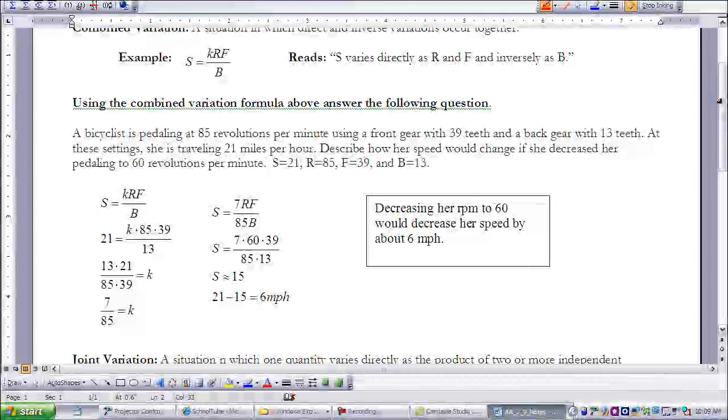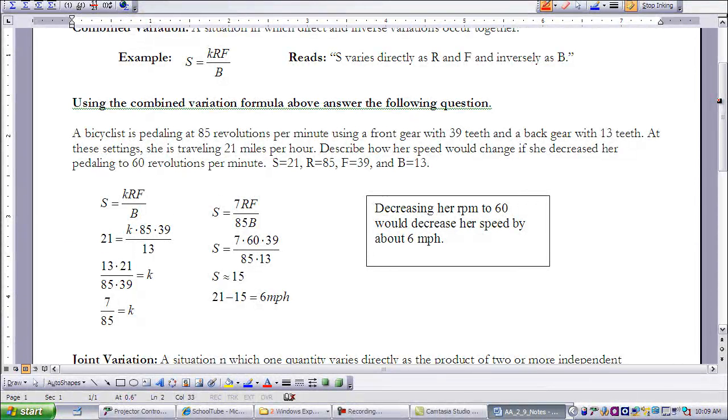So we're going to use our value given, so 39 teeth here's going in place of F. We were given 85 revolutions in place of R. And we were given 13 teeth for the back gear, so that can go in place of B. And we know that she's traveling at 21 miles per hour, so that is our S.